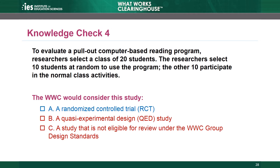Choices B and C are incorrect. The study is not a QED because it used a random process to create the groups, and this is an RCT so it is eligible for review. Note that the initial selection of the 20 students to participate in random assignment has no bearing on the eligibility of this study as an RCT. It does not matter how the researchers identify the population of students subject to randomization.